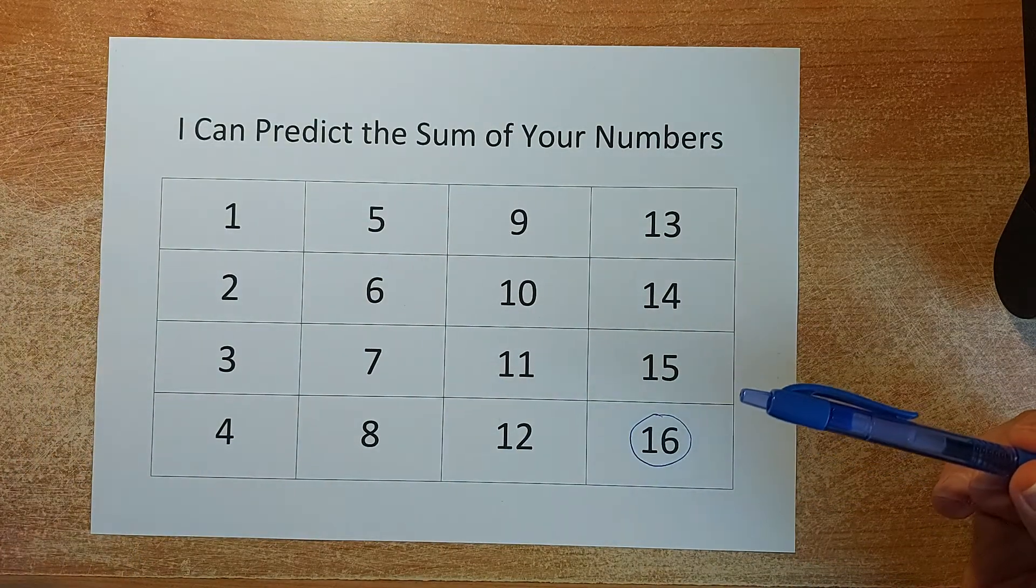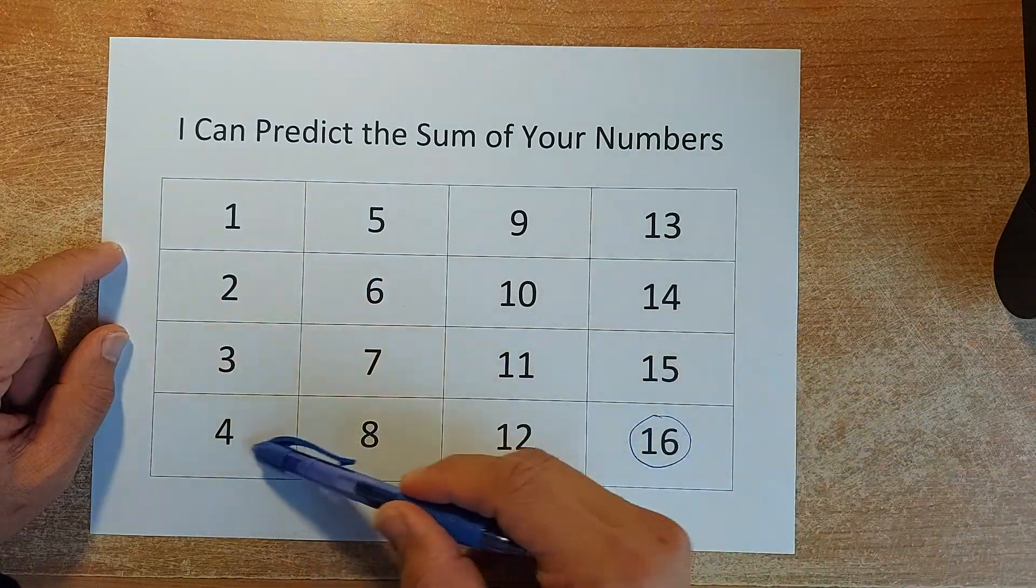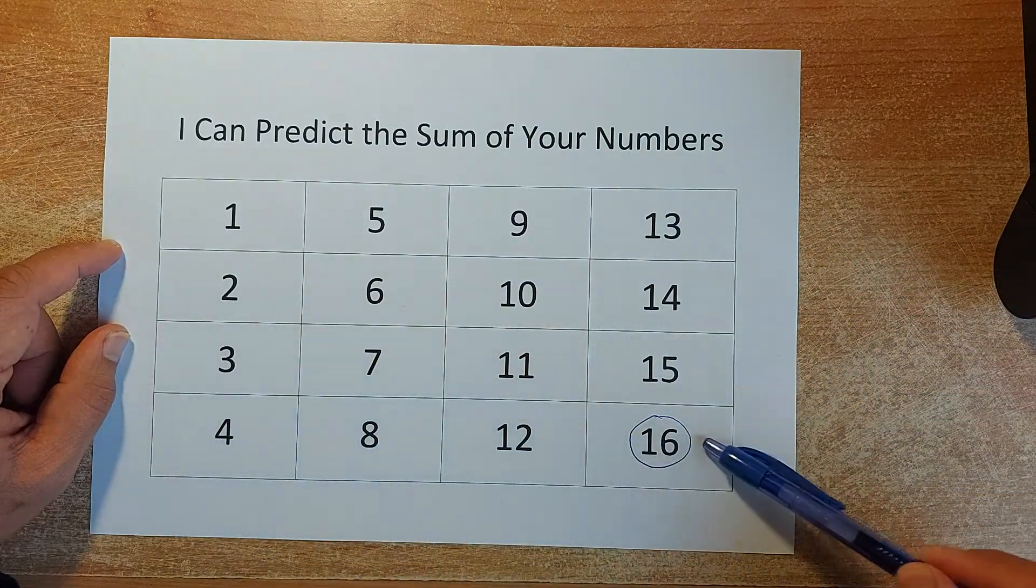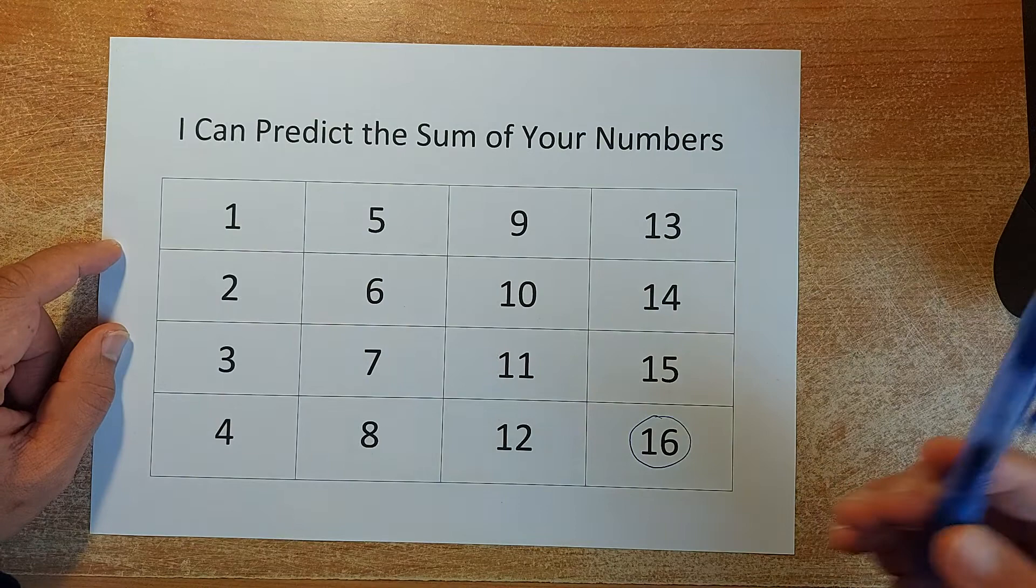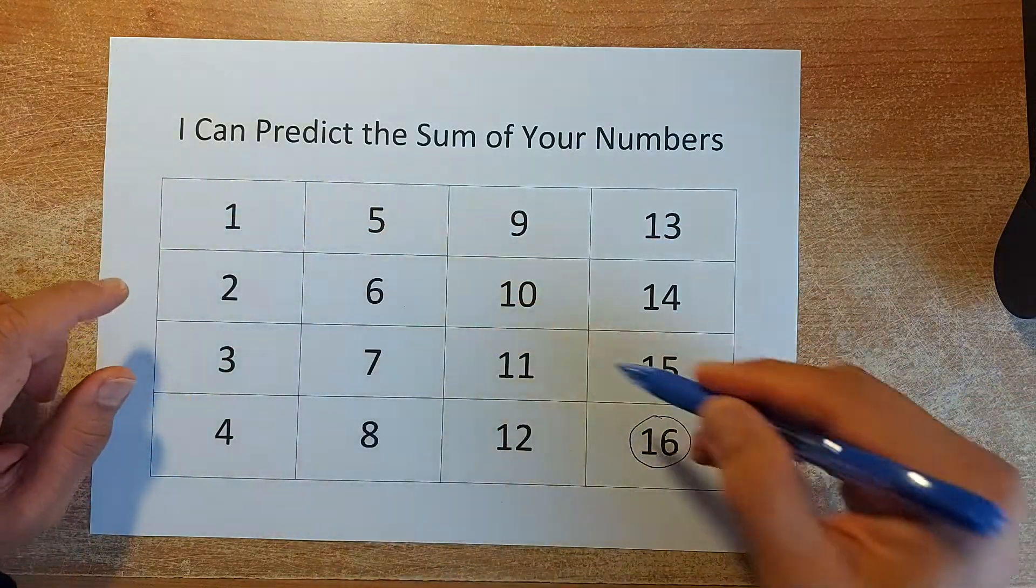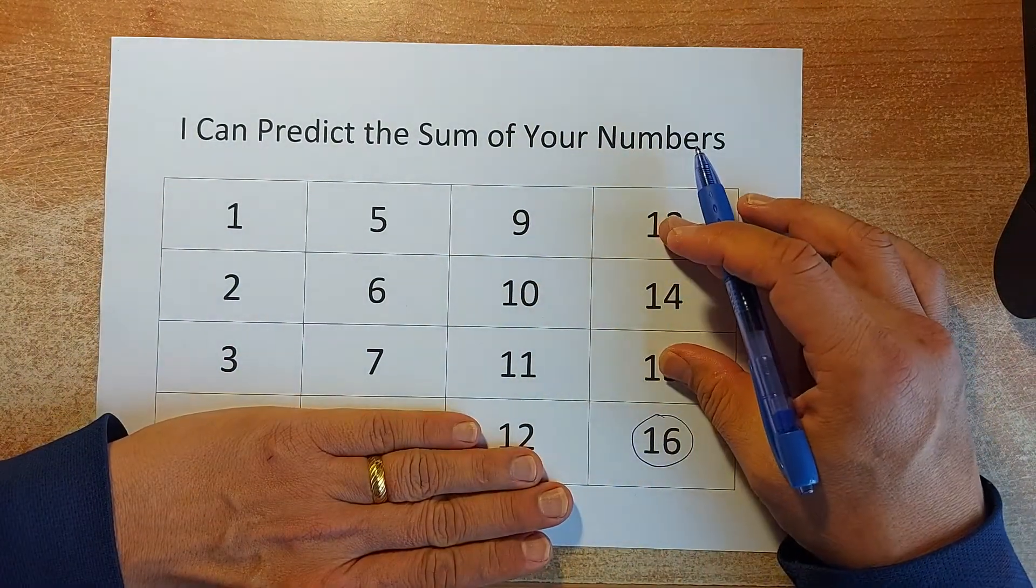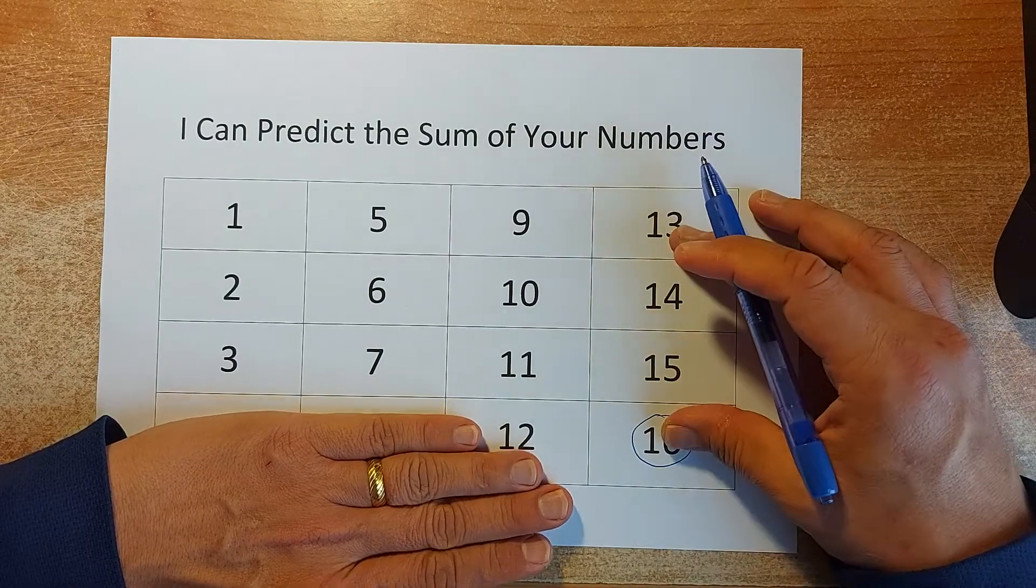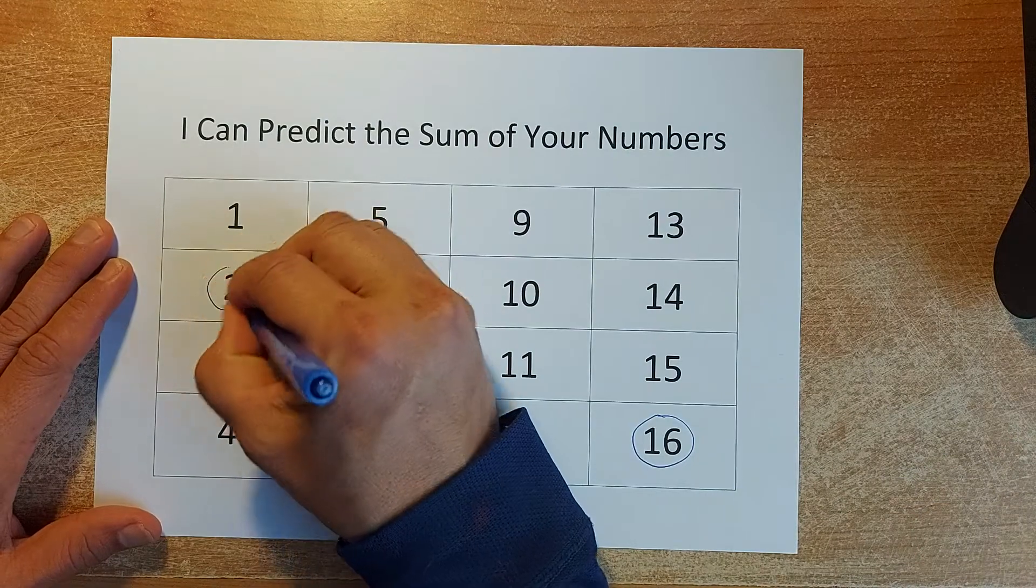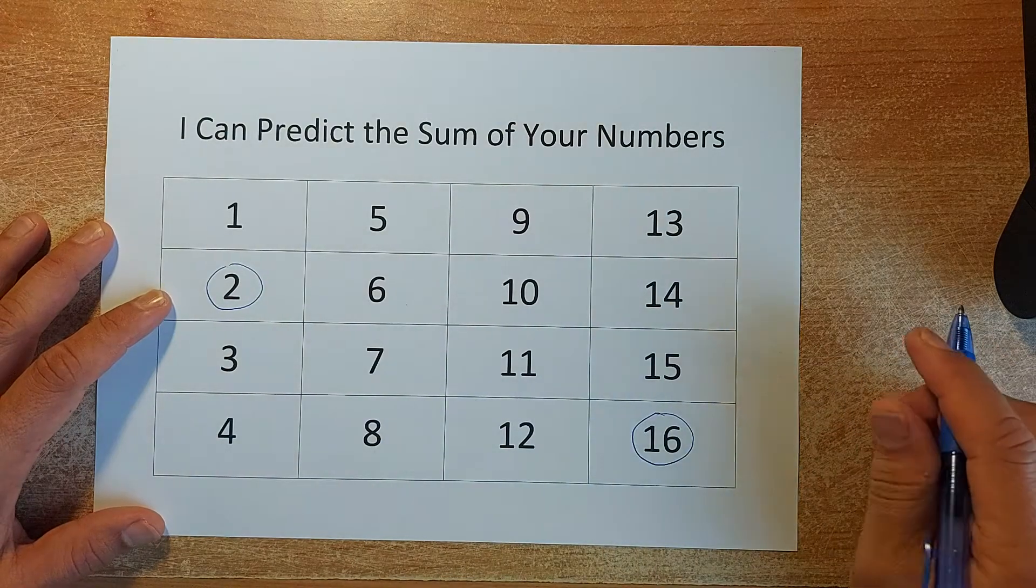Okay, now you're going to choose your second number. You cannot choose the number that is in the same row or same column from the number 16. So all these numbers are excluded. So you have to choose another number. So you can choose any number from 1 to 11. In this case, these 6 numbers are in the same row and same column as 16. So you cannot choose them anymore. Maybe I want to choose 2 now. Is it possible? Yes, because 2 is not in the same row and same column as 16. So the second number is going to be 2.